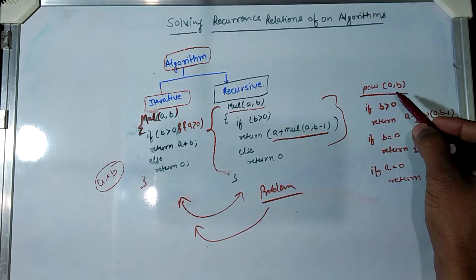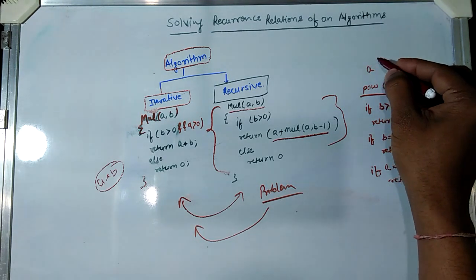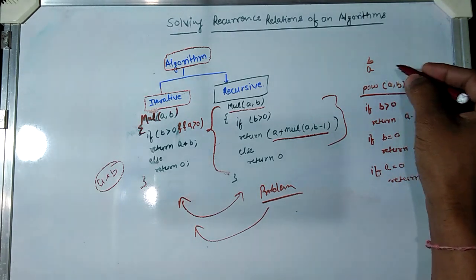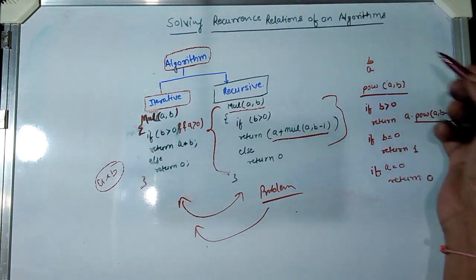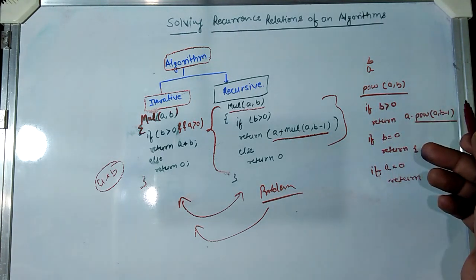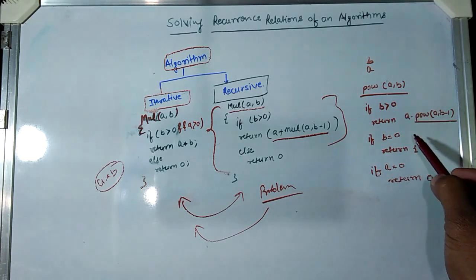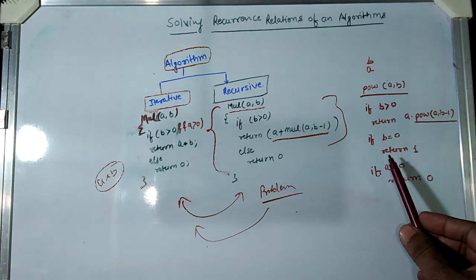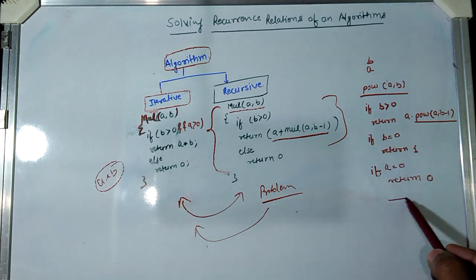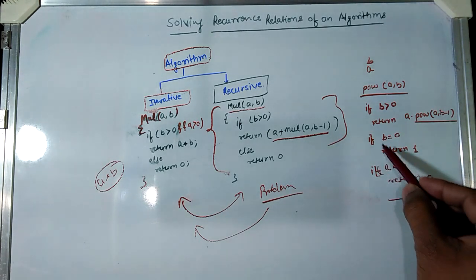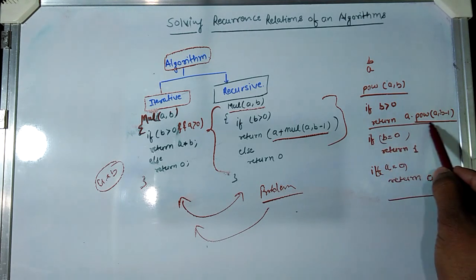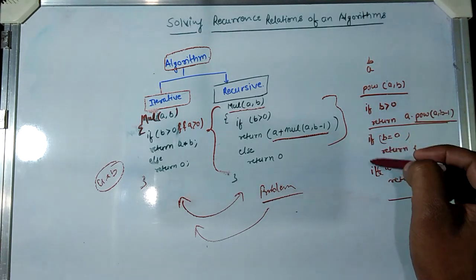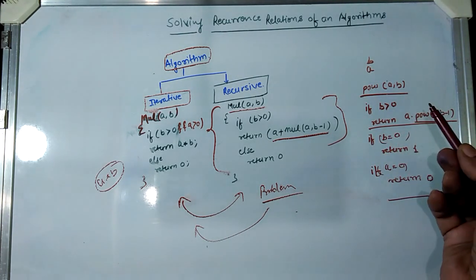Here I also write the algorithm to find the power of a to the b — the bth power of a. The recursive procedure is: if b is greater than zero then return a into power(a, b minus 1); if b is equal to zero then return 1; and if a is equal to zero then return 0. In the first condition a recursive call of the same function is made.